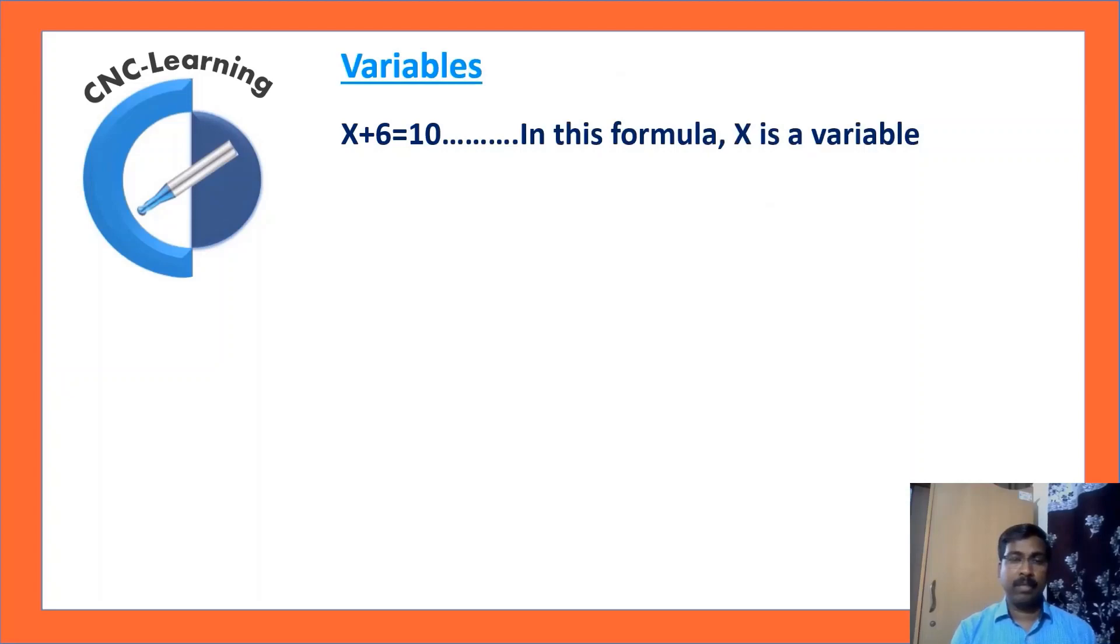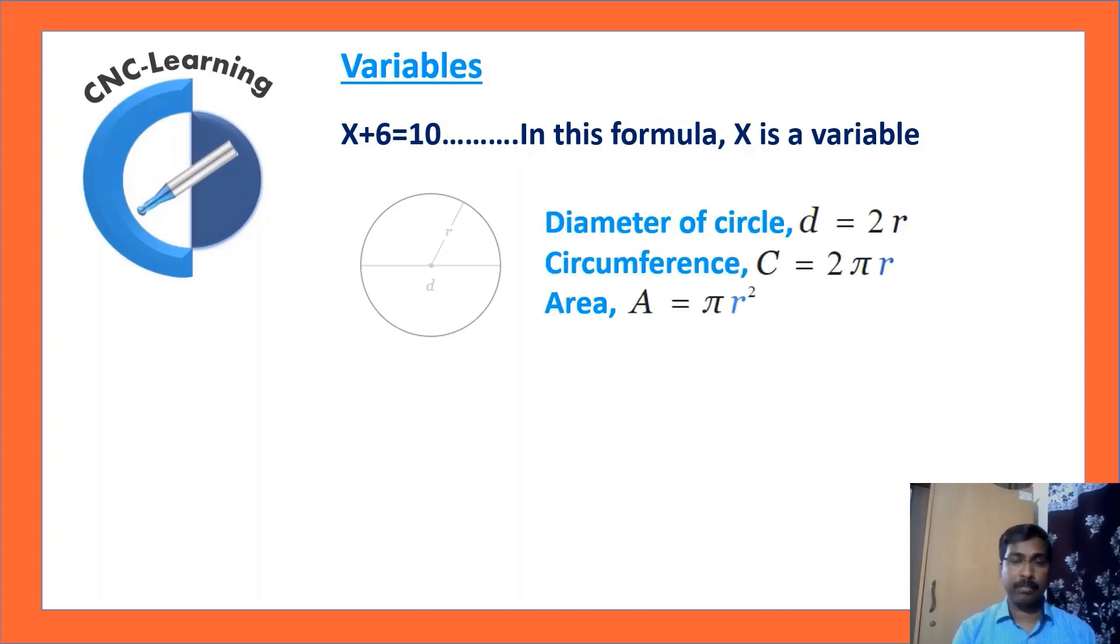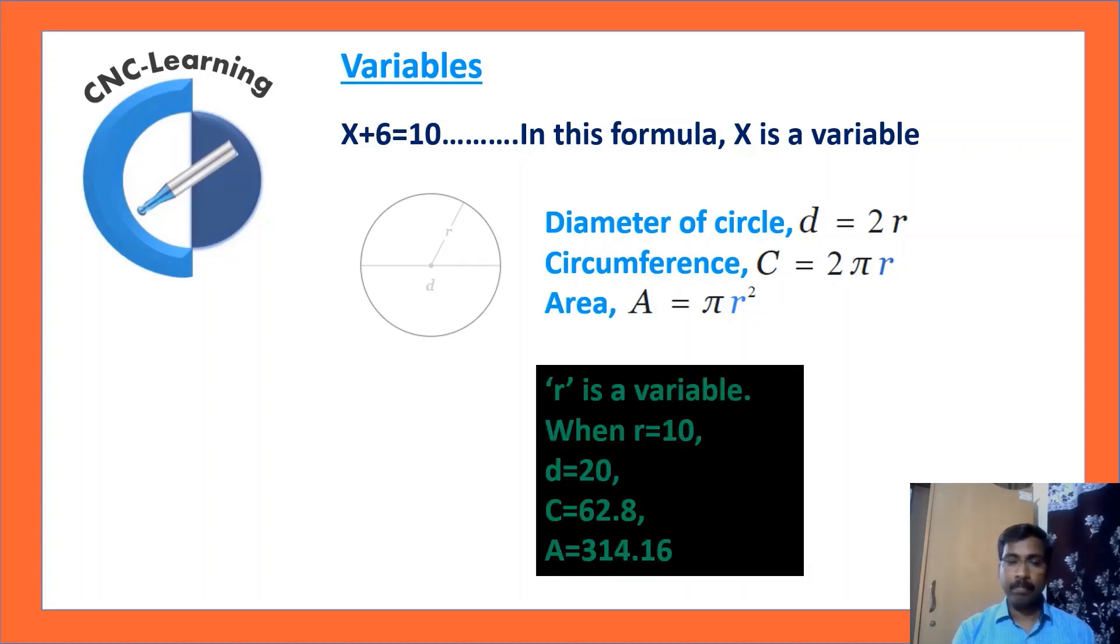Variables. Let us see this formula: x+6=10. In this, x is a variable. Now, in this sketch, you can see a circle and radius and diameter is mentioned. If you look at the formulas for a circle, diameter of circle d=2r, circumference C=2πr, area A=πr². So, in all these cases, you can see r is a variable. When r, the value of r is 10, then diameter is 20, circumference is 62.8, and area is 314.16.